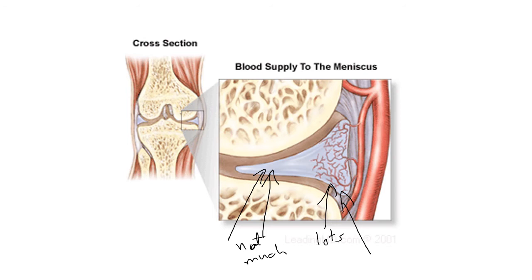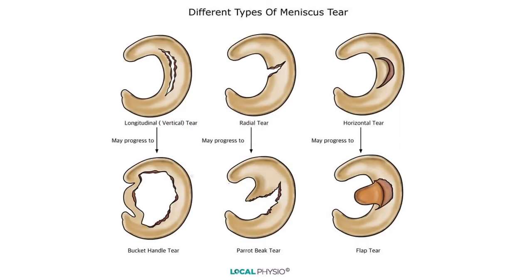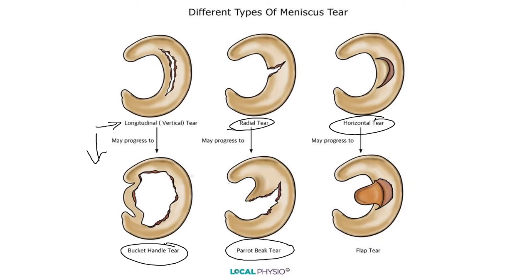If you get a tear in the inner area, it's not going to repair very well. If you get a tear out on the outer edge, you have a better chance of repair by the body itself. If you get a tear on the inside portion, you're probably going to have to have some knee surgery. There are two different types of meniscus tears: a longitudinal or vertical tear, a radial tear, and a horizontal tear. These can progress — a longitudinal tear can progress to a bucket handle tear, a radial can progress to a parrot beak tear, and a horizontal tear can progress to a flap that rubs against the condyle of the femur and causes pain.